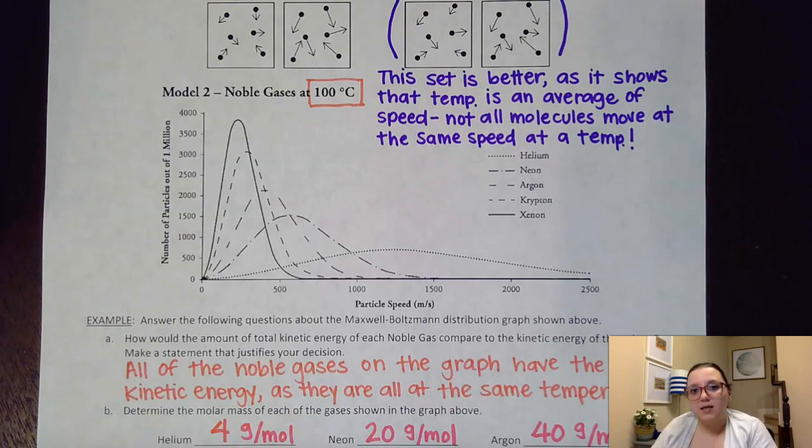But here's the issue. Kinetic energy is tied to temperature. However, kinetic energy is equal to one half mv squared. Those of you that have taken physics are probably familiar with that formula. KE equals one half mv squared. We're going to talk about it more in a video that you're going to watch after this one.